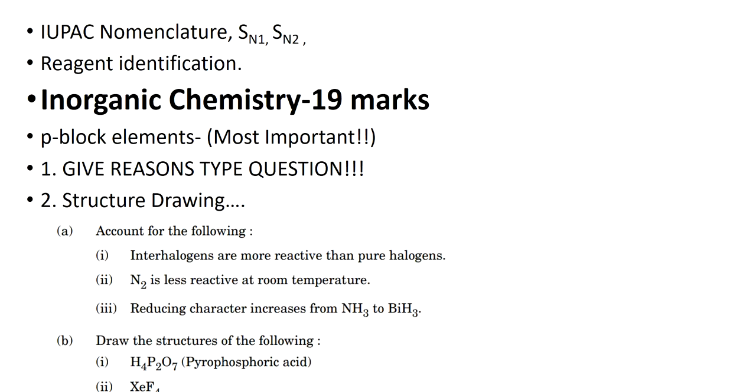Examples: N2 is less reactive at room temperature, reducing character increases from NH3 to BiH3 - these are various types. This is just three examples, you have an entire list of account for the following and give reasons why type questions. Then, draw the structures of the following - drawing structures is very, very important. Please don't skip this, it's very easy.